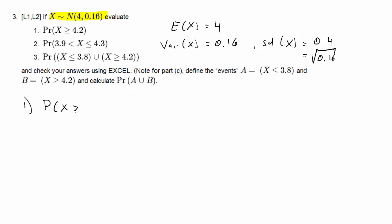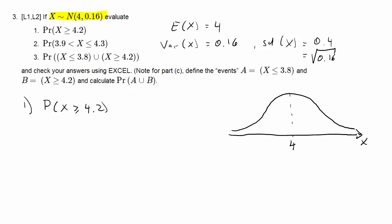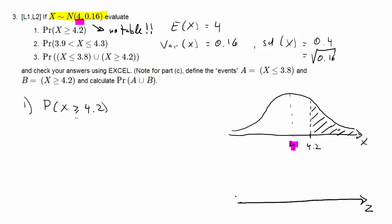Let's start with the first problem: the probability that the random variable x takes a value larger than or equal to 4.2. We sketch what we are looking at — a pdf with mean 4 — and we want the probability that x is larger than 4.2, which is that right-hand tail probability. We already know it should be smaller than 50%. The problem is that for that distribution we don't have a table, so we need to translate this into a standard normally distributed problem for which we do have a table.